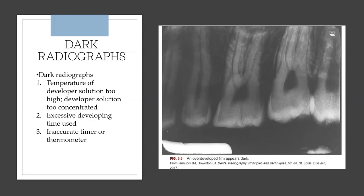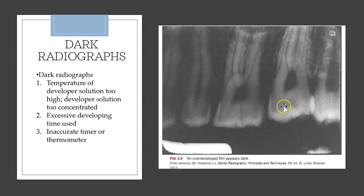A dark radiograph is an overdeveloped film. This can happen if the developer solution temperature is too high or if the development time was too long. We see this less now because digital radiography has largely replaced traditional darkroom processing.